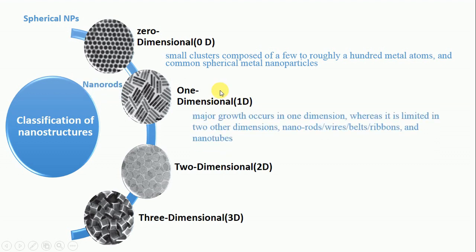Second one is nanorods. Due to their rod-like shape and one-dimensional behavior, these are called nanorods. Their major growth occurs in one dimension whereas it is limited in two other dimensions. Examples include nanorods, wires, belts, ribbons, and nanotubes.